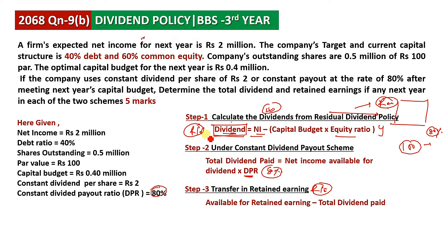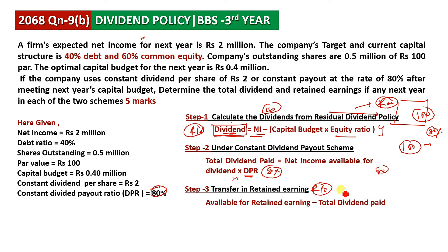The retained earnings have 50% in return, while only 20% is paid in dividends. The answer to the question is the amount transferred to retained earnings. Suppose 100% of available income is declared as dividend; the balance would be transferred to retained earnings.